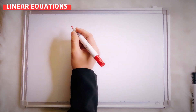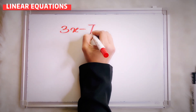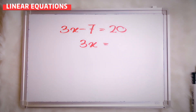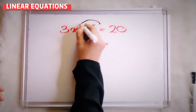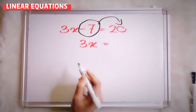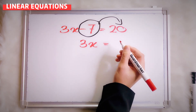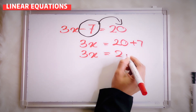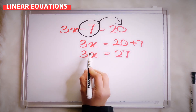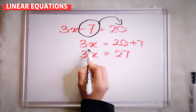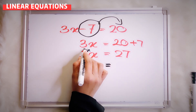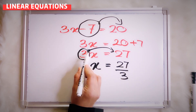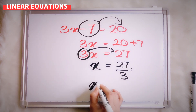Let's say I give you 3x minus 7 equals to 20. So you take negative 7 and transfer it to the right side. Since it is negative, the opposite is positive. So we have 20 plus 7, giving us 3x equals to 27. Remember, when you see 3x with no operation between 3 and x, that means it is multiplication. So divide 27 by 3, and your x will be 9.